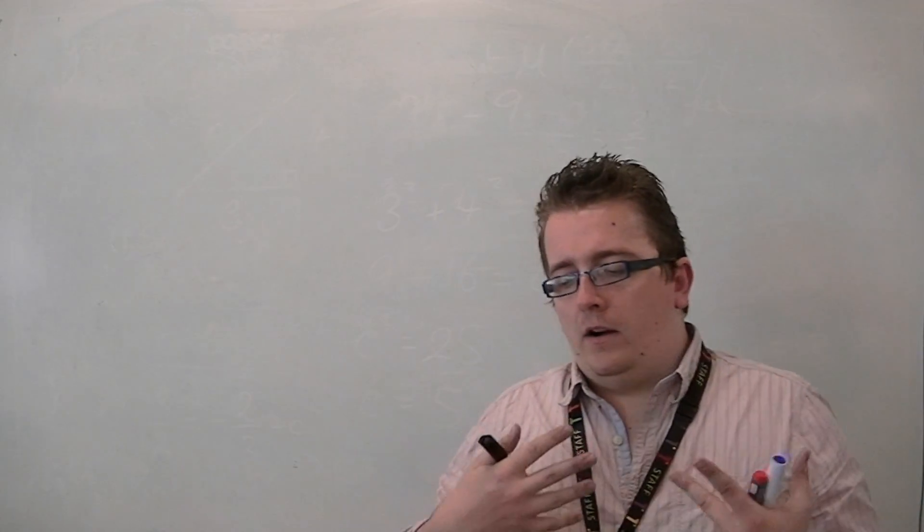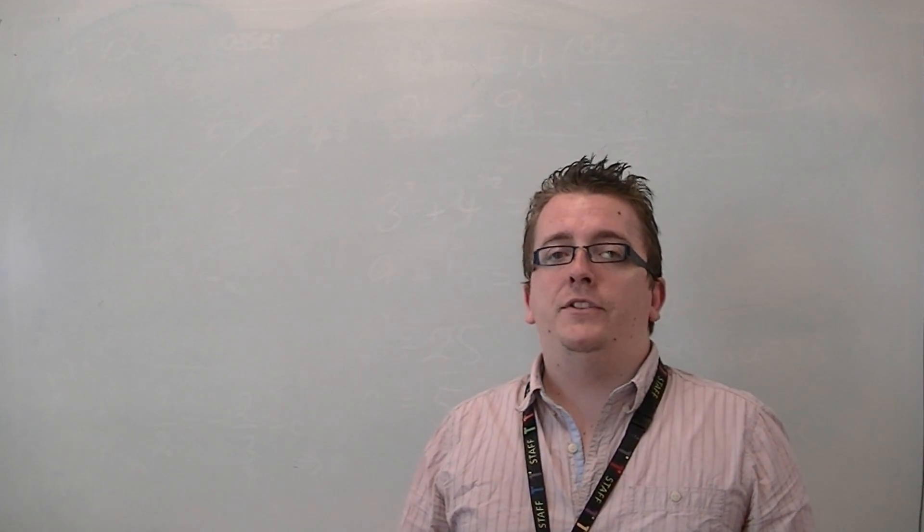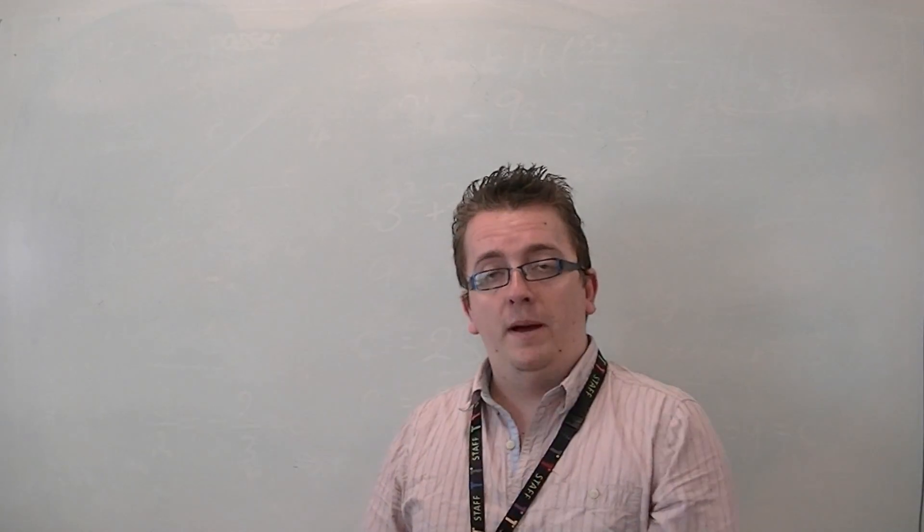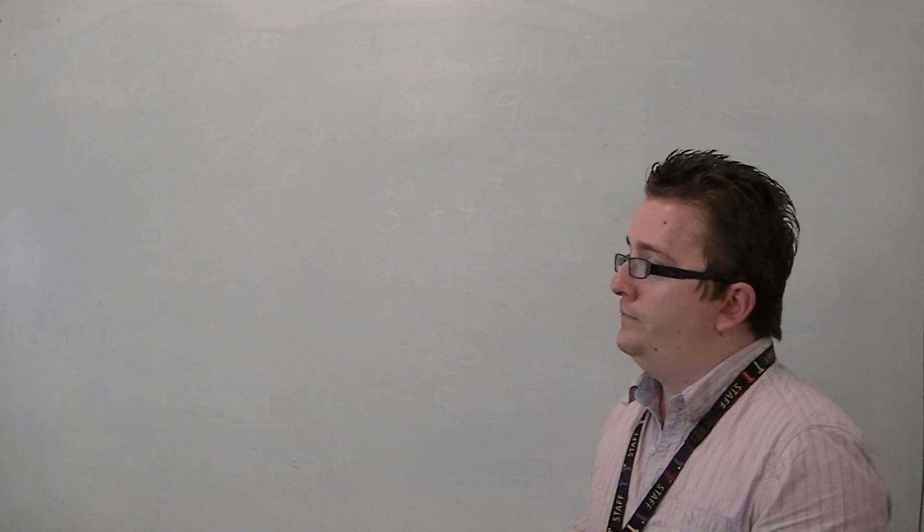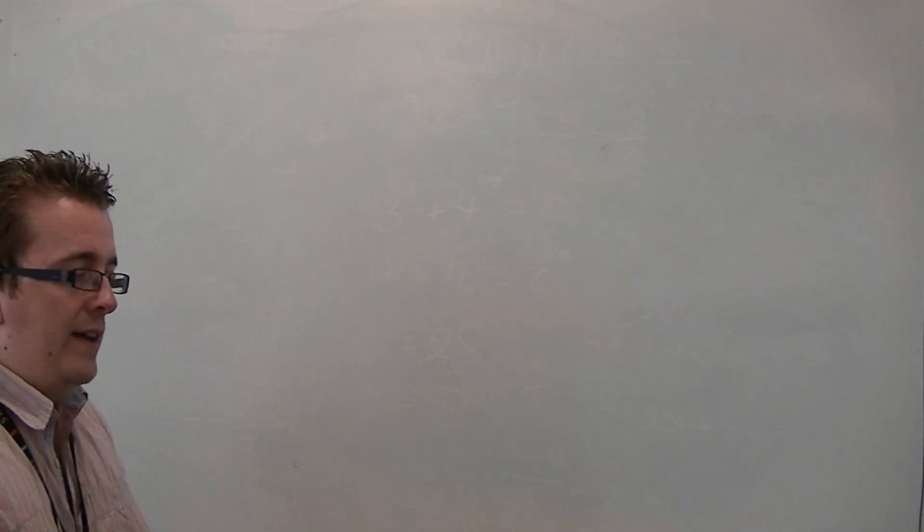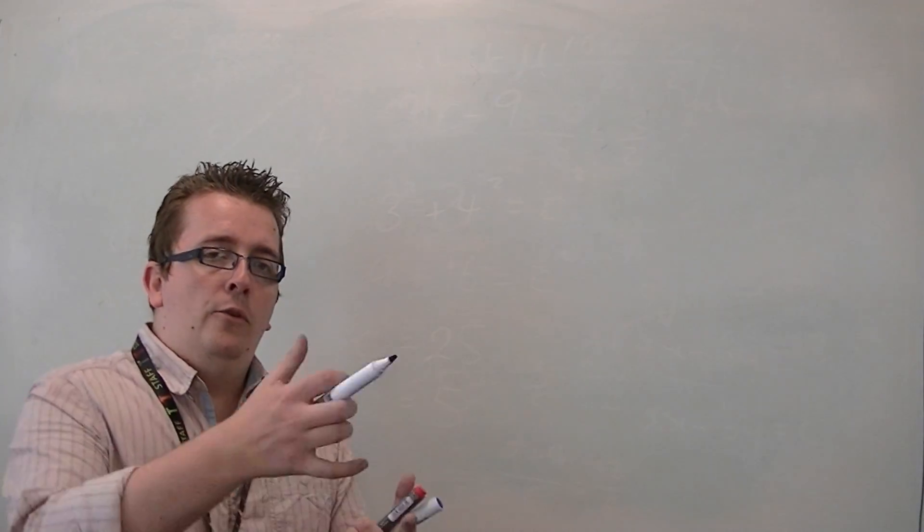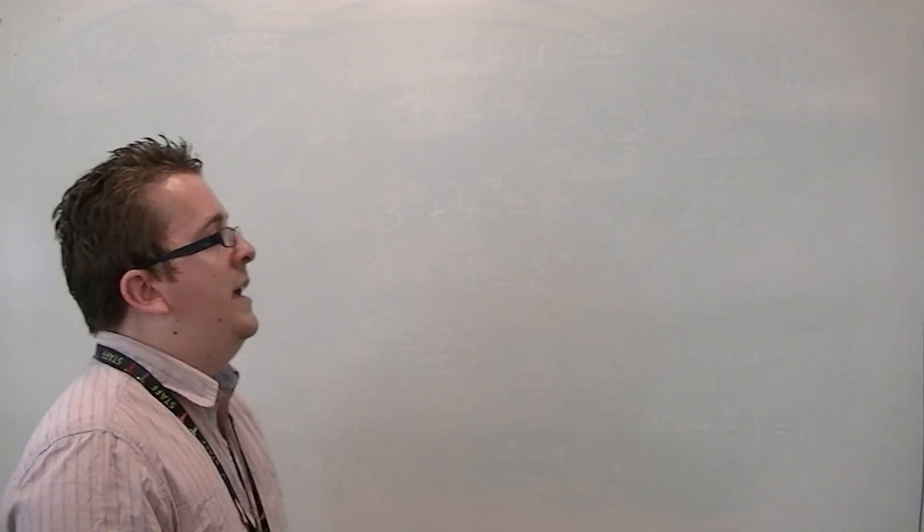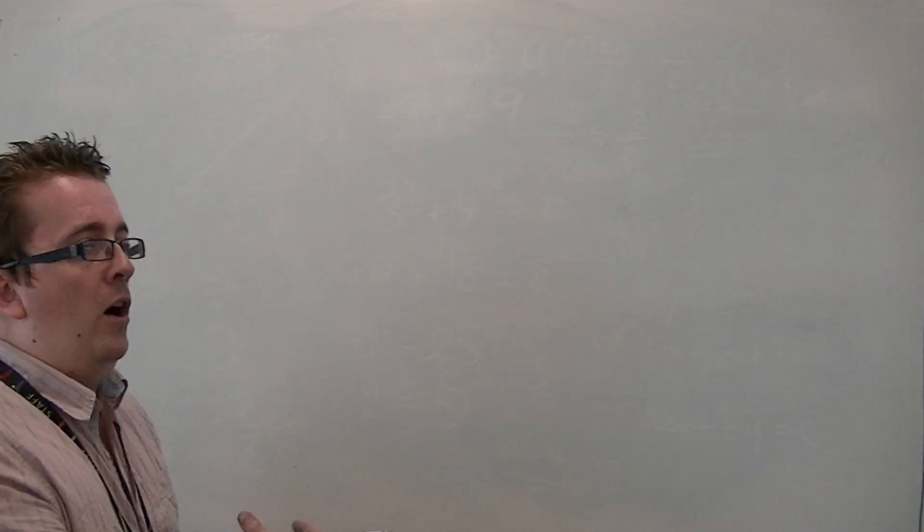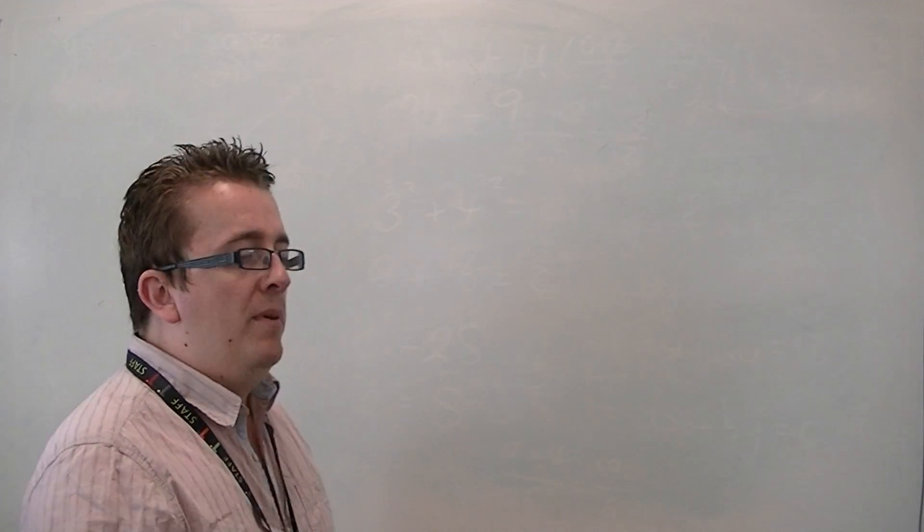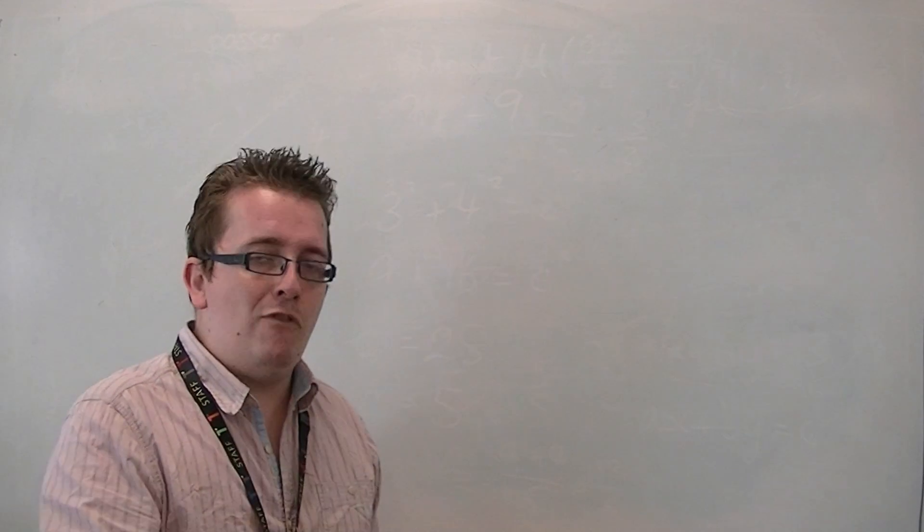Surds are the term that we refer to when we're looking at irrational numbers that are given as the square root of a number. Except for the perfect squares like 1, 4, 9, 16, the square numbers. If you square root a whole number, then that is an irrational number. It is a number that cannot be written as a fraction.